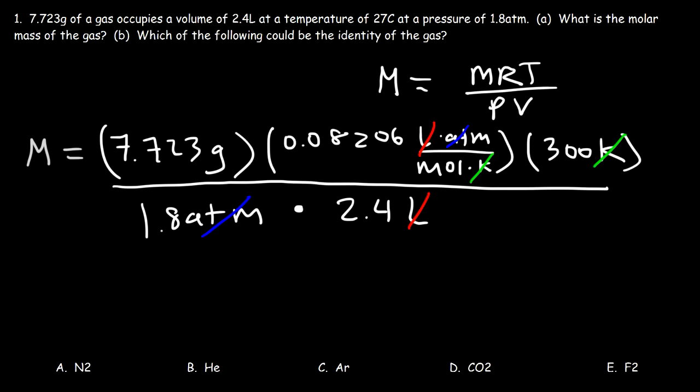Now, let's plug in the numbers that we have. So it's 7.723 times 0.08206 times 300, which is about 190.12. And then take that result, divide it by 1.8, and then divide that by 2.4. So you should get a molar mass that's equal to 44.01 grams per mole. So that's the answer to part A.